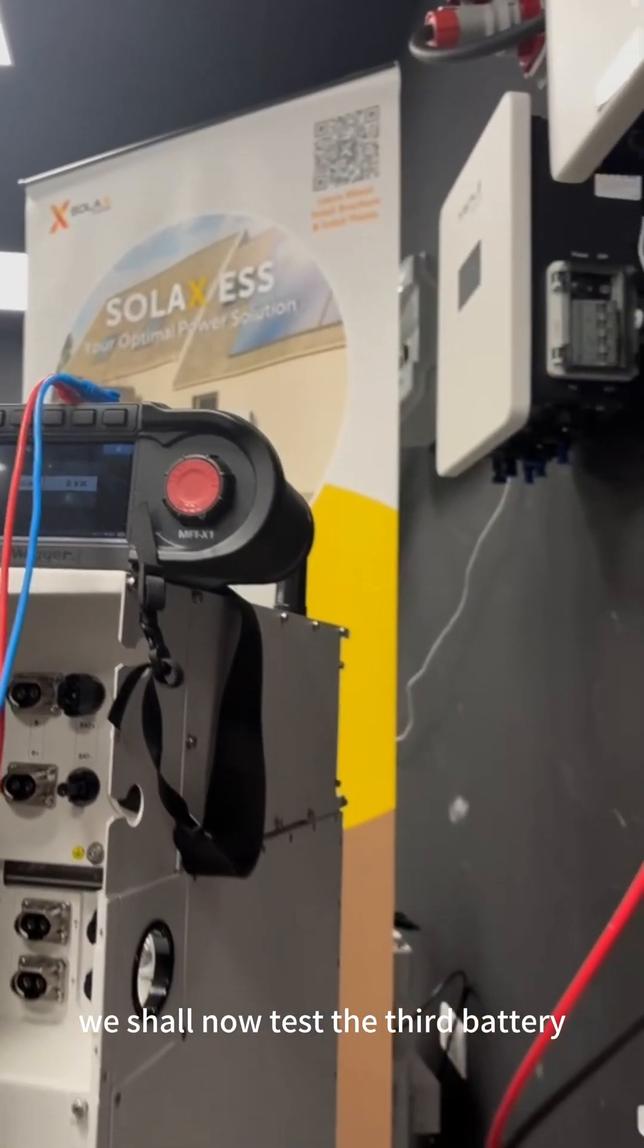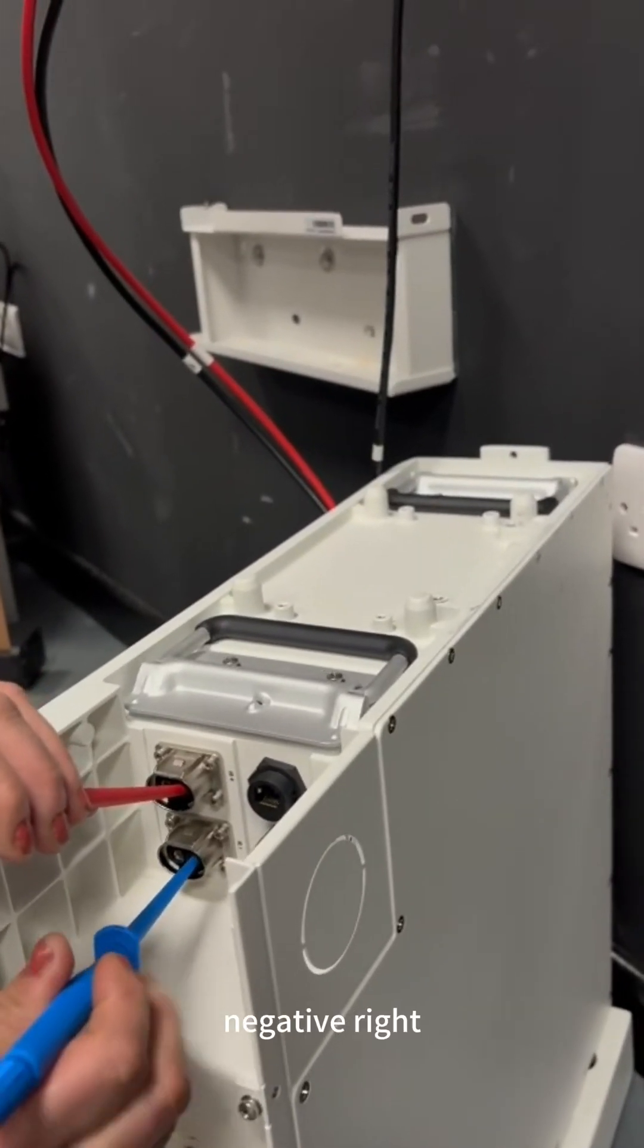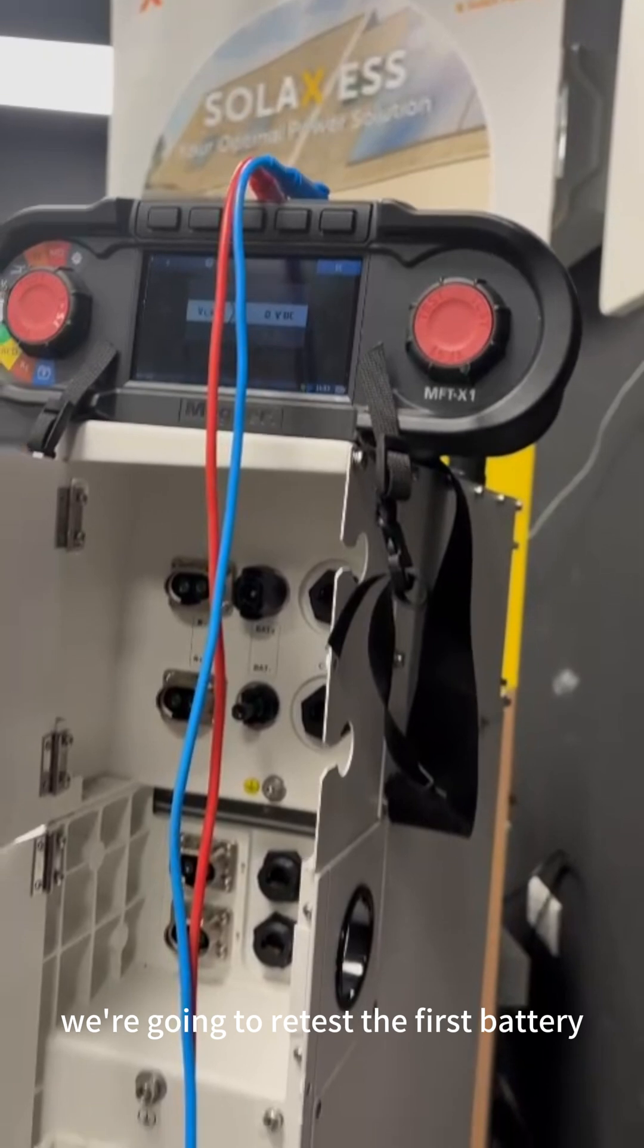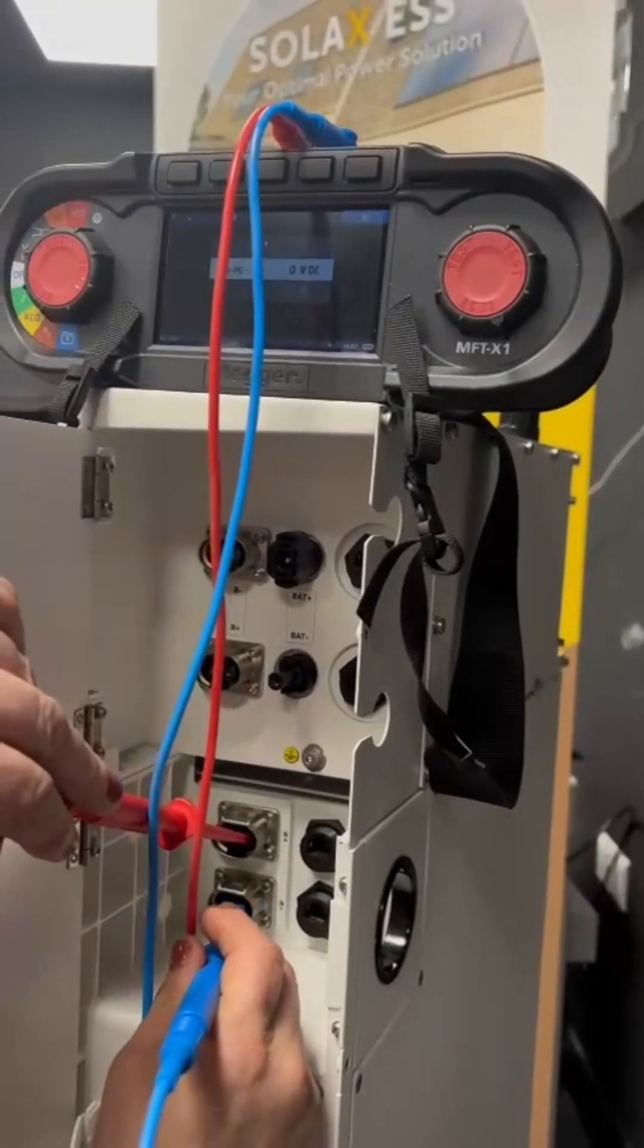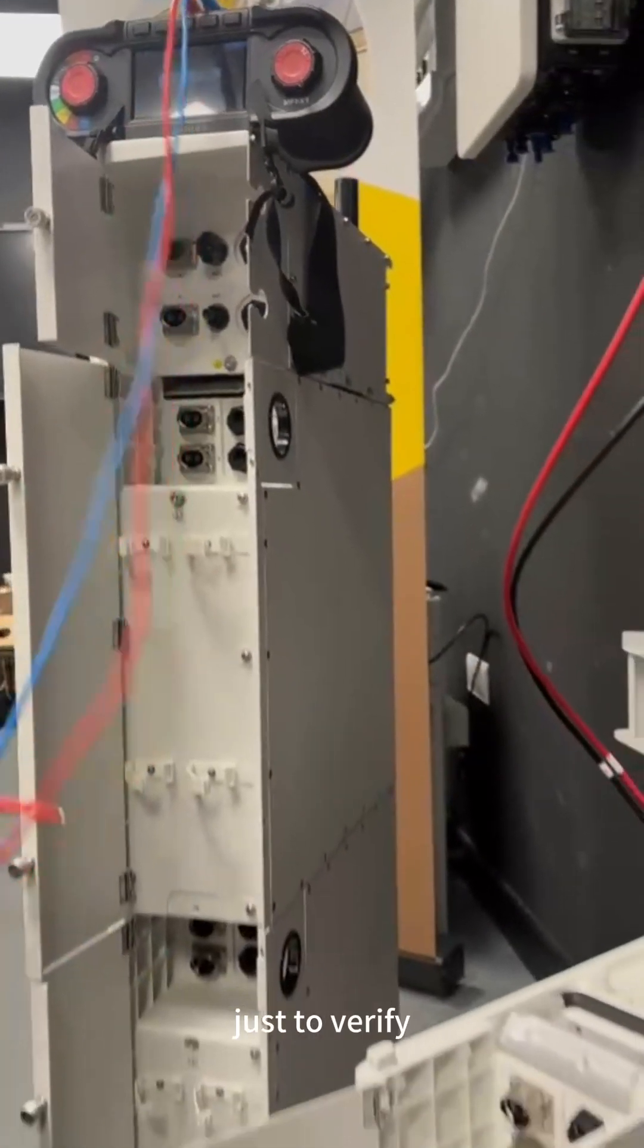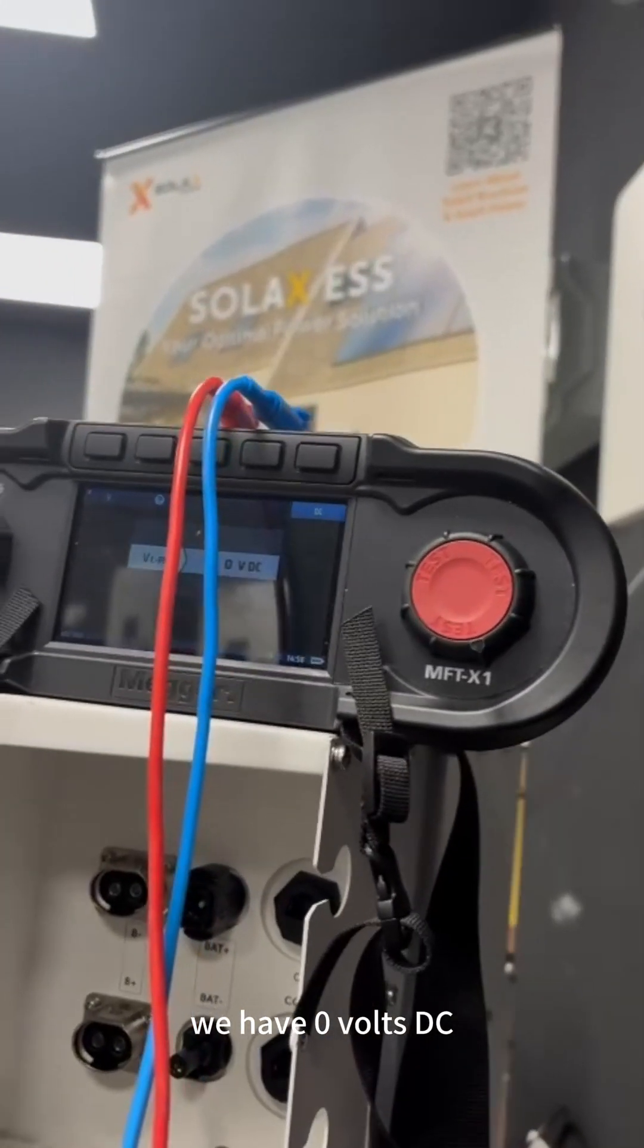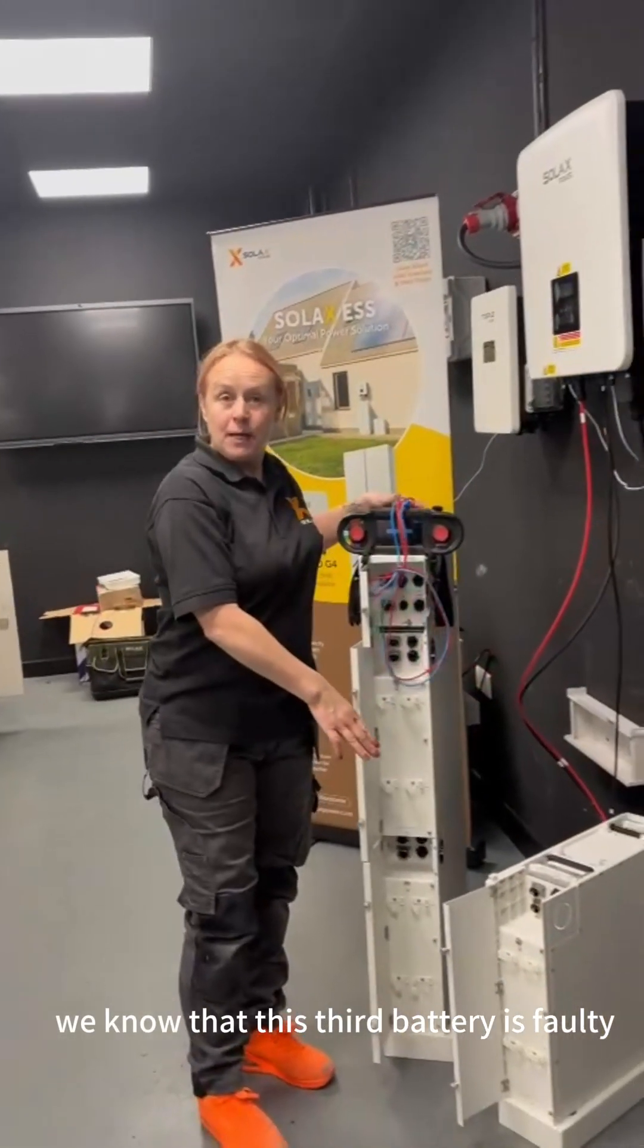We shall now test the third battery. Positive right, negative right. And on the tester, we have zero volts. Just to make sure our tester is OK, we're going to retest the first battery. Positive right, negative right. 105 volts DC. And back to the third battery, just to verify. Positive right, negative right. As you can see, we have zero volts DC.